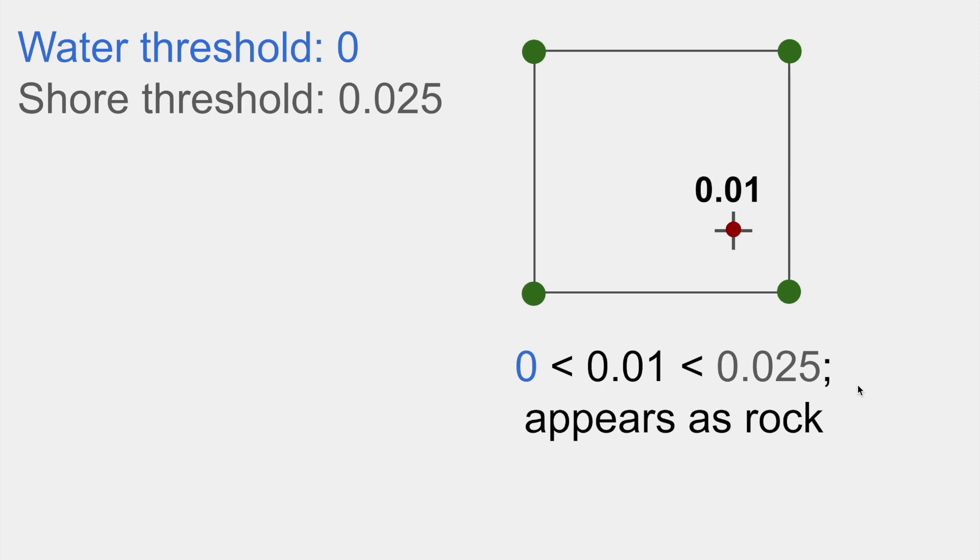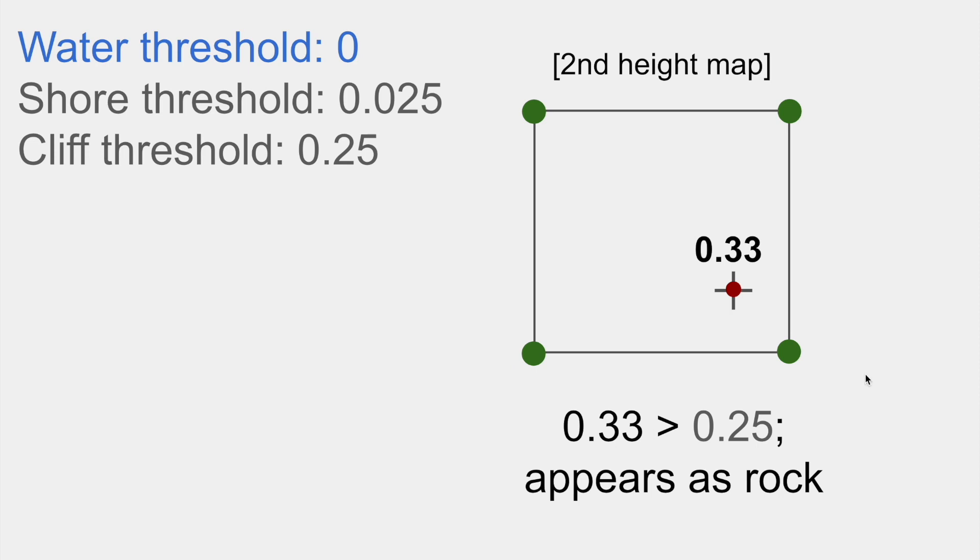We're almost there. Can you guess how the rocky parts that aren't along the shore are generated? Maybe you guessed it. It's a similar method to the water. An additional layer of Perlin noise is created, not to add to the height map, but to sample for every pixel to determine if a pixel is supposed to be rocky. If the noise value for this layer is greater than a certain value, then it is used as rock. In my project, this threshold is 0.25.